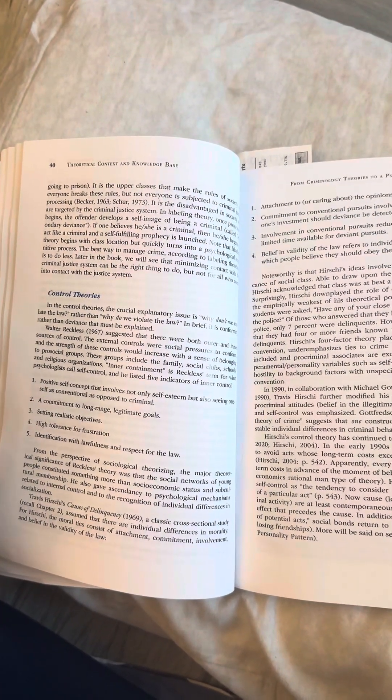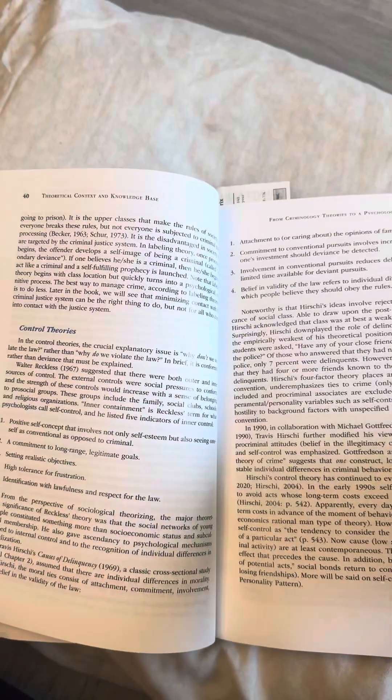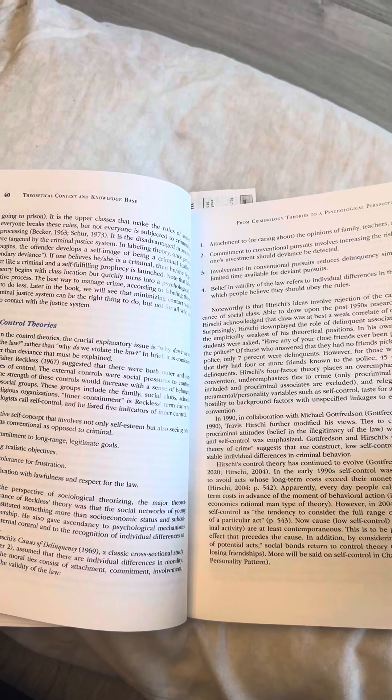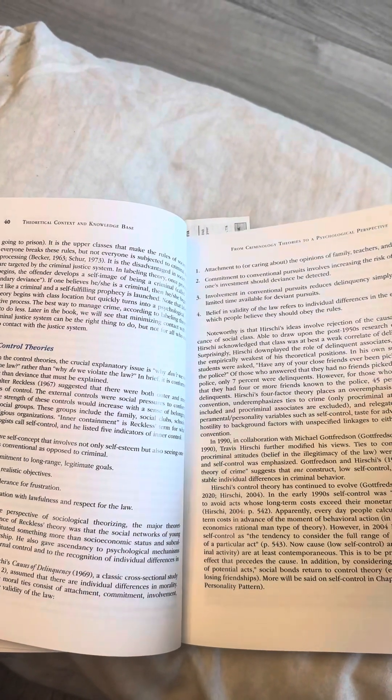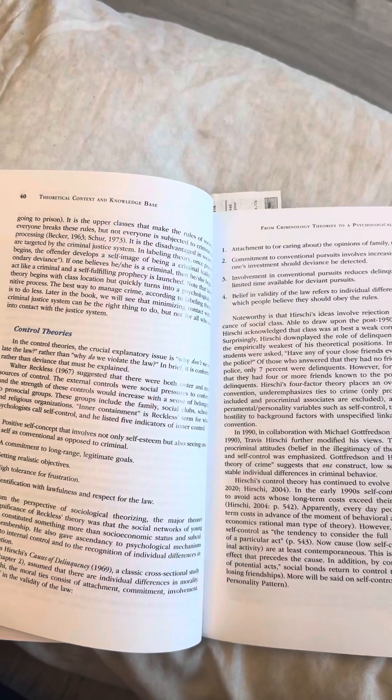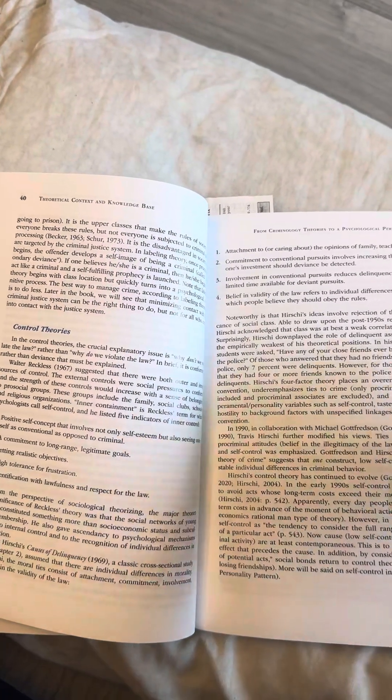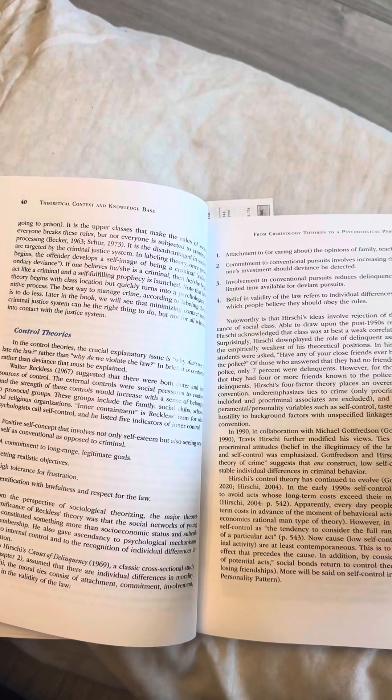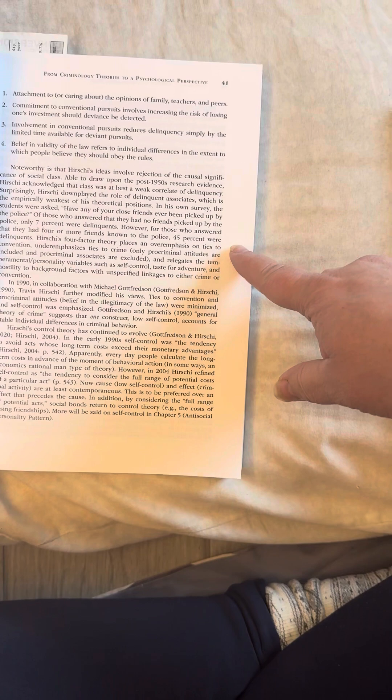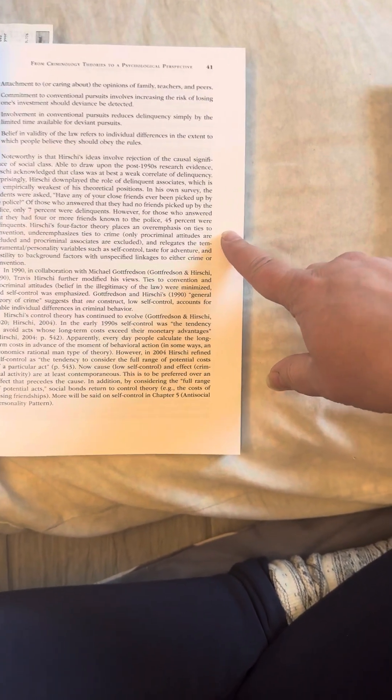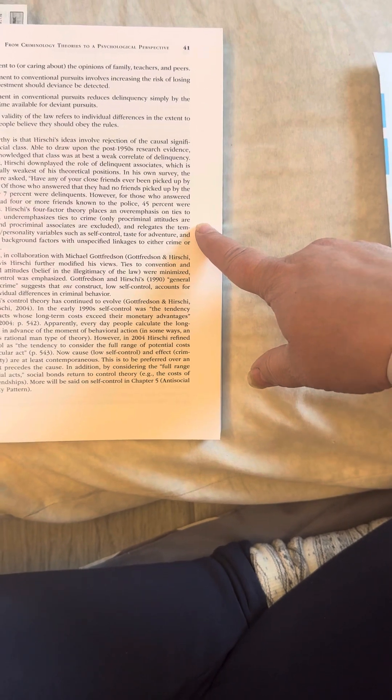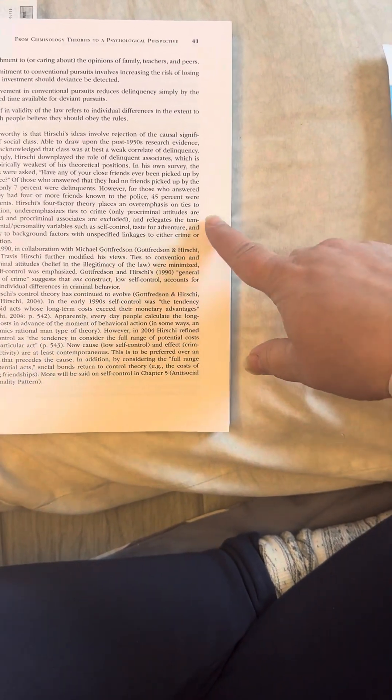Noteworthy is that Hirschi's ideas involve rejection of the causal significance of social class. Able to draw upon the post-1950s research evidence, Hirschi acknowledged that class was, at best, a weak correlate of delinquency. Surprisingly, Hirschi downplayed the role of delinquent associates, which is the empirically weakest of his theoretical positions. In his own survey, the students were asked, have any of your close friends ever been picked up by the police? Of those who answered that they had no friends picked up by the police, only 7% were delinquents. However, for those who answered that they had four or more friends known to the police, 45% were delinquents.